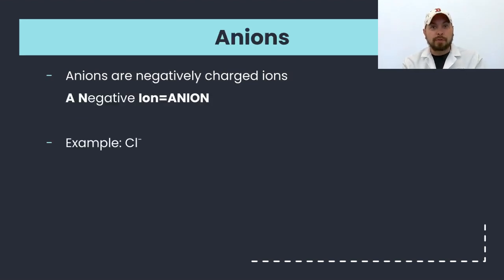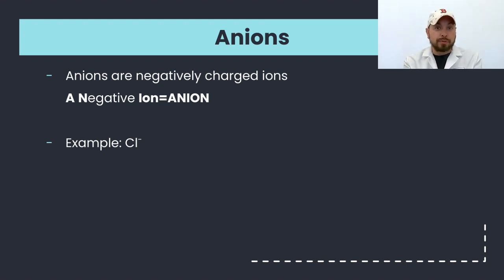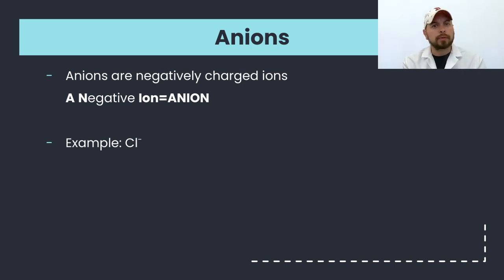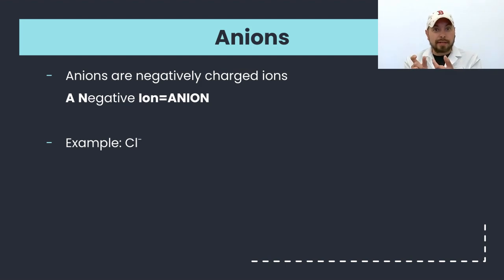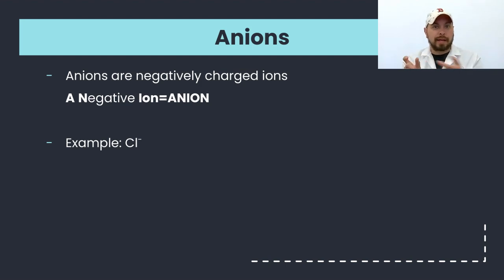Anions are formed when you gain electrons. So when you go from a neutral atom — charge of zero — and gain an electron, you become negatively charged. This is an anion, a negative ion.